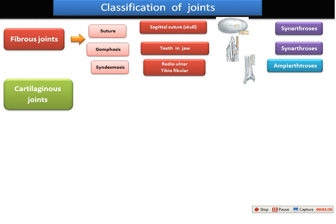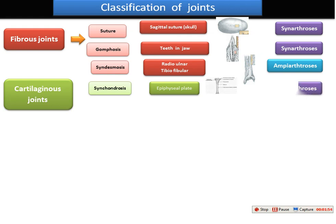The second type according to structure is the cartilaginous joint. These joints start with synchondrosis. Synchondrosis is found in the epiphyseal plate — the growth plate found in the bone — and this also has no movement, so it is classified as synarthrosis.